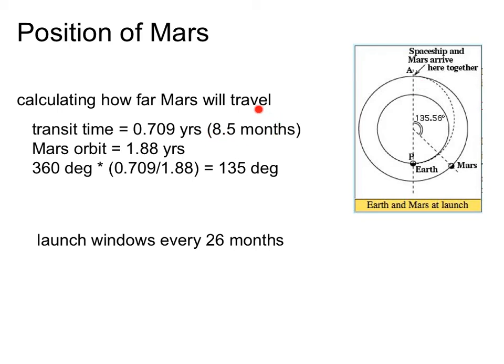Well, it takes us 8.5 months to get there. Mars takes 1.88 years to go 360 degrees around the sun. So 0.7 years divided by 1.88 years is a little less than half of Mars' orbit around the sun. So it actually ends up to be 135 degrees. So if this is the rendezvous point, we have to launch from Earth when Mars is 135 degrees away from that rendezvous point.